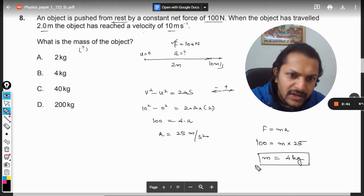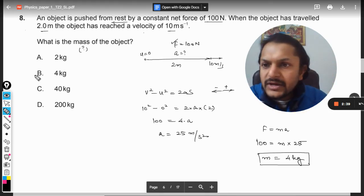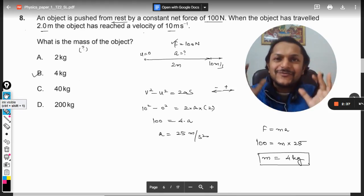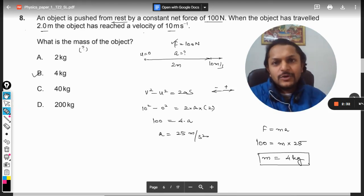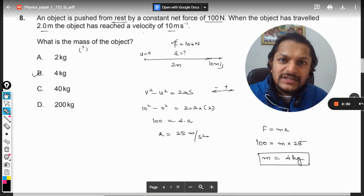From there we get that mass should be coming out to be equal to 4 kg. So this is how we do it. Yes, we are having this 4 kg in our options, so our answer is B.